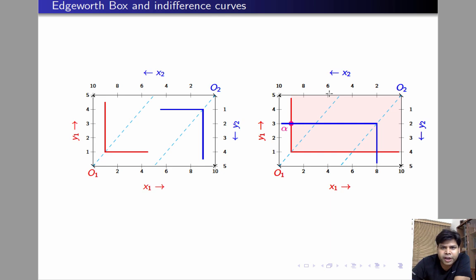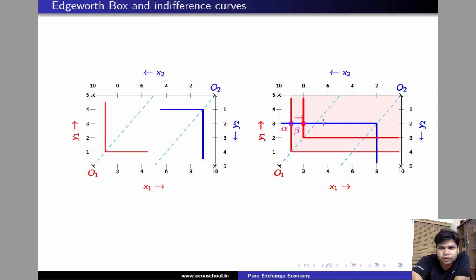This is the region where individual 1 is strictly better off. If we move to any point in this region, individual 1 will strictly prefer that point to allocation alpha. So if we move to a point like beta from alpha, we are keeping the satisfaction level of 2 fixed but improving the satisfaction level of individual 1, because that's on a higher IC. So clearly alpha cannot be efficient, because there is a way to make individual 1 better off without reducing the satisfaction level of individual 2. This reasoning holds for any point above this 45-degree line — any such point cannot be efficient.